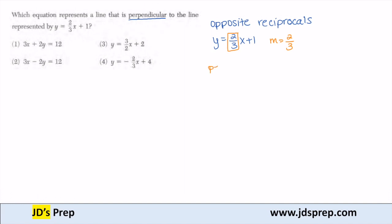Because I want the perpendicular line, I need to find which one of the options below has the perpendicular slope. And again, perpendicular slopes have to be opposite reciprocals.